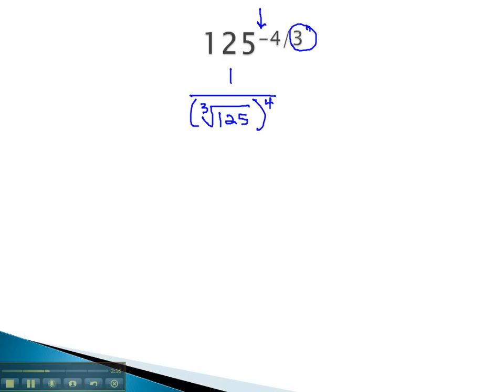We can now calculate the parentheses, which is the cube root of 125. We may be able to do that in our heads, or we can simply find the prime factorization by dividing by 5, 5, and 5. We now have 1 over the cube root of 5 to the 3rd, all of that raised to the 4th power.